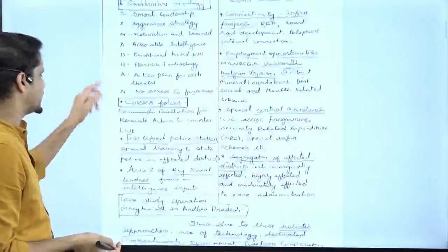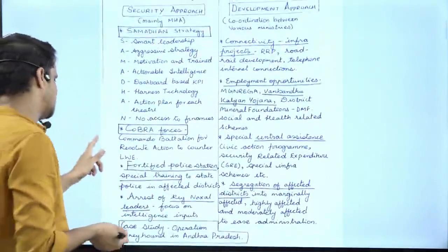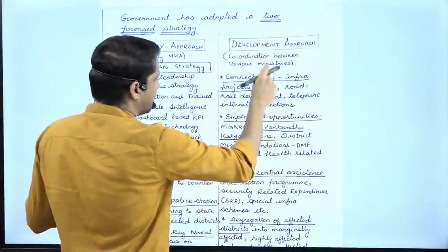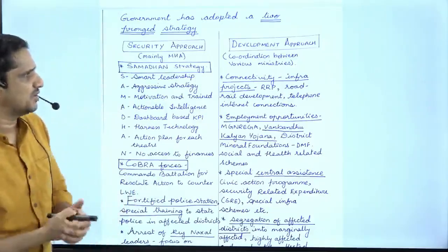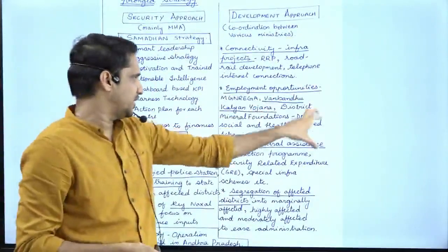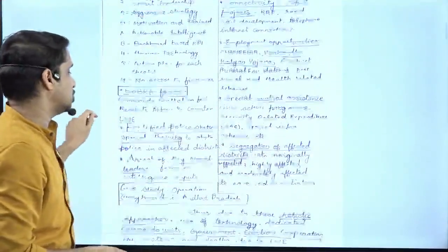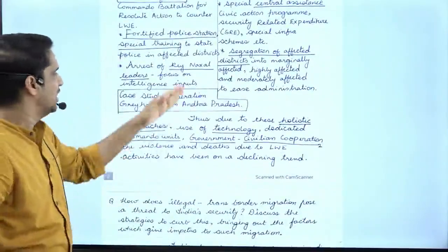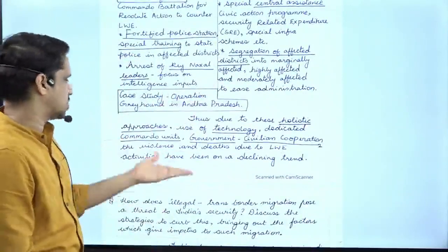Security approach is mainly the responsibility of MHA. Then she mentioned Samadhan strategy, COBRA forces, fortified police stations, arresting of key Naxal leaders, focus on intelligence inputs. In development approach: connectivity, infrastructure projects. Whenever a left wing extremism question comes, always mention the infrastructure or connectivity part. Then mention various employment opportunities, special central assistance, segregation of affected districts into marginally affected, highly affected, and moderately affected to ease the administration burden.